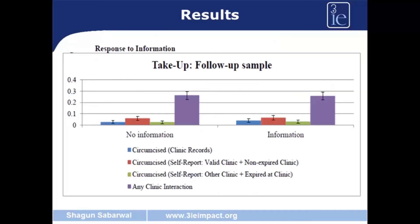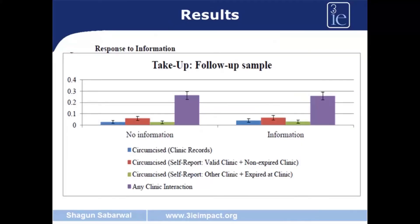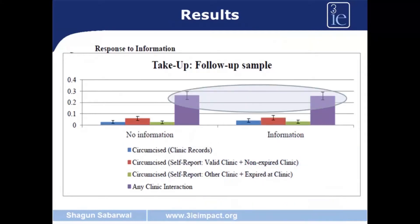The next slide shows whether people who got the information and those who did not have any difference in circumcision rates. Again, we see that there is not much difference. Overall in the study, the circumcision rates were very low, about 4%. We also find that there is no difference between those who got the information and those who did not. Both groups look pretty similar to each other.